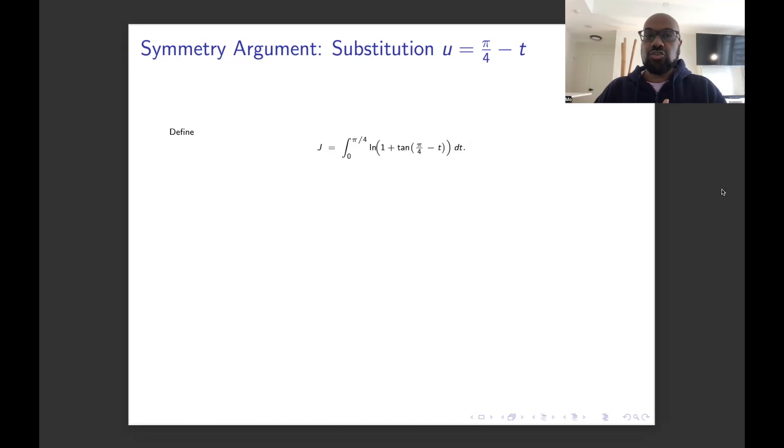So now we're going to introduce this integral j, which actually takes the symmetry into account. So instead of integrating from 0 to π/4 of natural log of 1 + tan t dt, we're going to do tan of π/4 - t. So we'll let u be π/4 - t to see what this symmetrized version of the original integral will actually turn out to be.